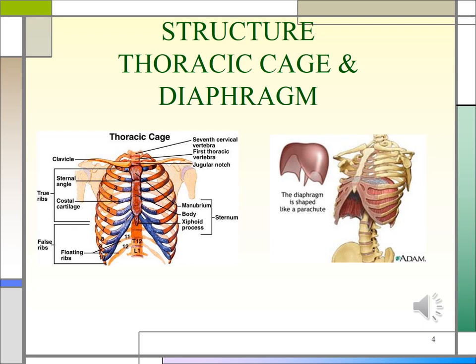The first 7 ribs attach directly to the sternum via their costal cartilages. Ribs 8, 9, and 10 attach to the costal cartilage, and ribs 11 and 12 are floating with free palpable tips.